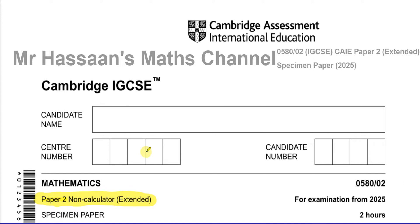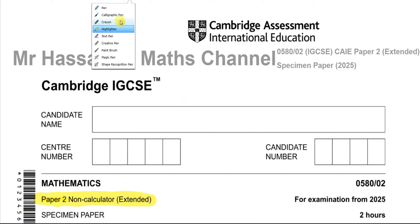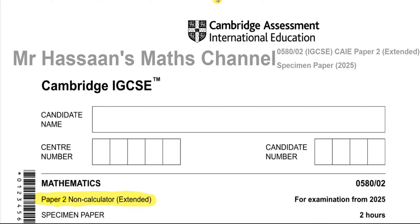Up to now, students have been used to using a calculator at all times in the exam. There were certain topics where they were able to work backwards or use the calculator's answer to guide them through questions, even when asked to show steps. Things like checking answers, adding fractions — you no longer have that option. This changes a lot of things compared to the older papers from the old specification.